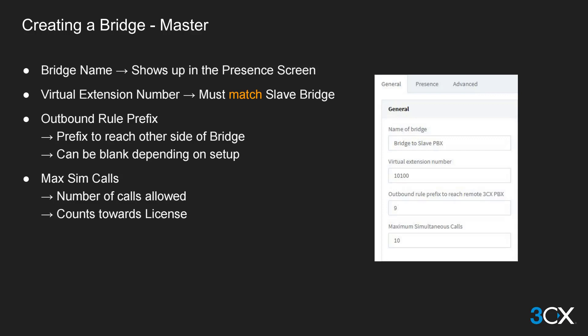It is important that the virtual extension number is identical on both PBXs at both ends of the bridge. A common free virtual extension number will need to be assigned to both ends. The outbound rule prefix is added to the bridge settings to facilitate the placement of calls from one PBX to another. This can be left blank if you have extension numbers in different ranges on each PBX, or when the two PBXs are using a different extension digit length.